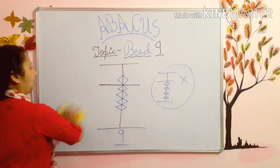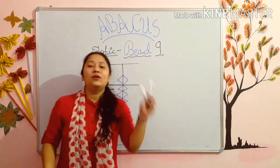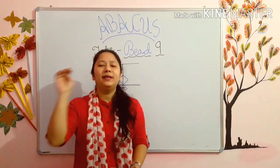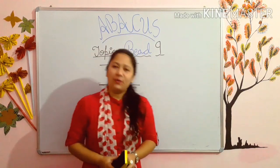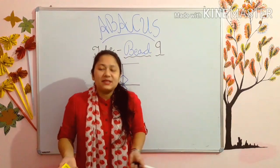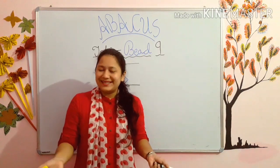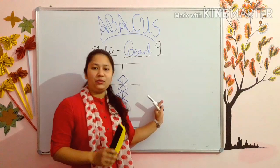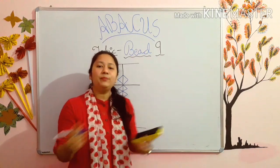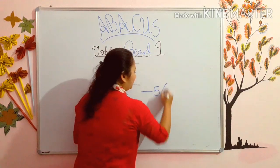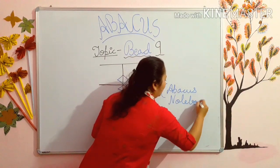Kids, today you have learnt how to make bead 9. Bead 9 is the combination of bead 5 and bead 4. I hope you all got this video. Kids, you can make it more creative by adding numbers with the help of balloons. With this video I have given you one homework PDF in which you have to make bead 9 five times in your abacus notebook.